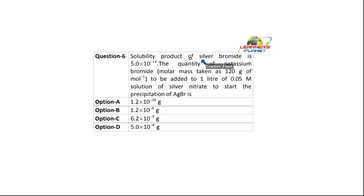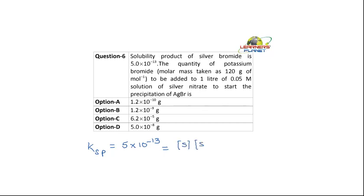The solubility product of silver bromide is 5 into 10 to the power minus 13. Ksp of AgBr = 5×10⁻¹³. Silver bromide dissociates into silver ions and bromide ions, so Ksp equals the solubility of silver multiplied by the solubility of bromide, which gives us 5×10⁻¹³ = S².